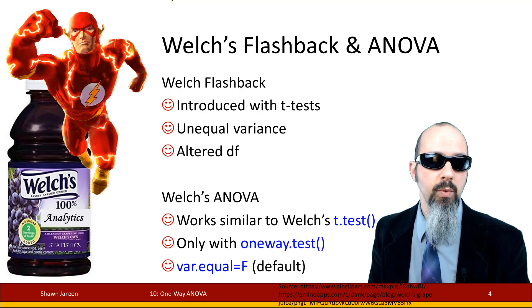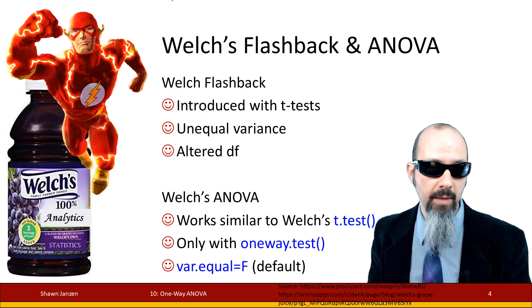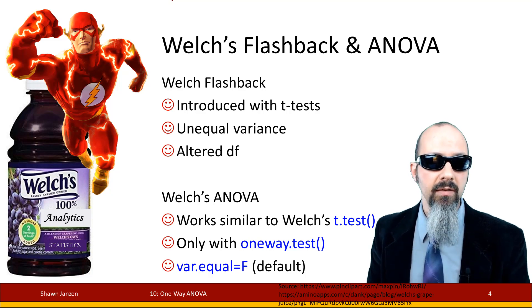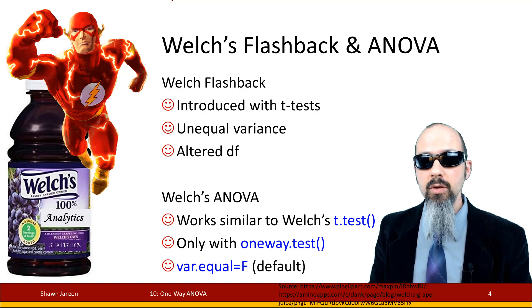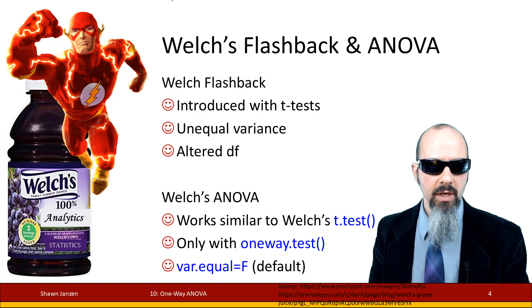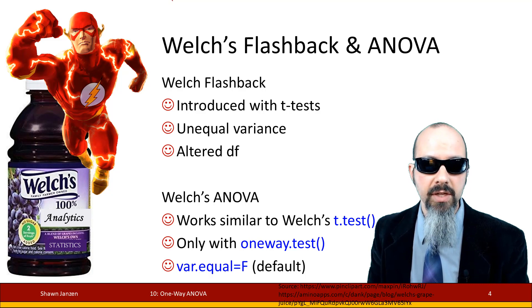We showed that you can use the Levene test as a tool to compare the variation between groups. It has a null and alternative hypothesis, and if you reject the null hypothesis of Levene's test, it tells you that you have variances that are unequal and that you should be using the Welsh ANOVA — short for the Welsh one-way ANOVA.